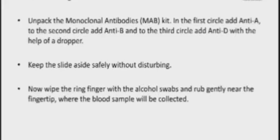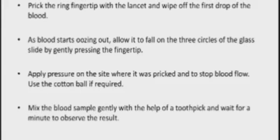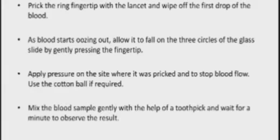Wipe your ring finger with the alcohol swab and rub gently near the fingertip so that blood flow increases to the fingertip and a blood sample can be collected. After rubbing, prick the ring finger with the lancet and wipe out the first drop of blood — discard it. As blood starts oozing out, allow it to fall on the three circles — the A circle, B circle, and D circle — by gently pressing your fingertip. Apply pressure to stop the blood flow; if it is not stopping, use a cotton ball.